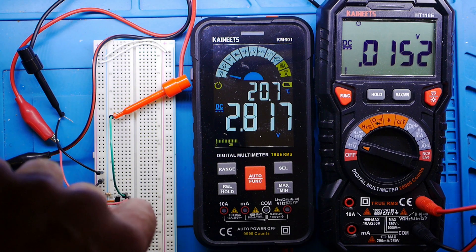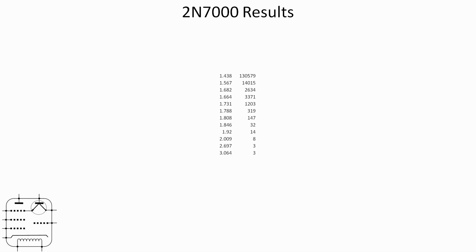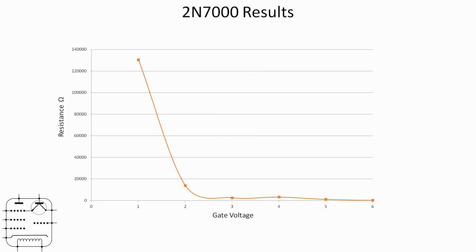Now let's hop back to the slides and look at the results in the form of a table. Here are the results for the 2N7000 — gate voltage on the left and calculated resistance on the right. That's pretty meaningless as a list of numbers, so let's get Excel to plot that as a graph. With resistance up the left-hand side and gate voltage along the bottom, you can see that the resistance begins to drop dramatically above one volt, and once it gets beyond about two volts — by the time you've reached not even two and a half volts — the gate resistance is very low indeed and continues in a very low state as you increase the voltage up to six volts. A very abrupt change in the internal resistance of the MOSFET with changing gate voltage.